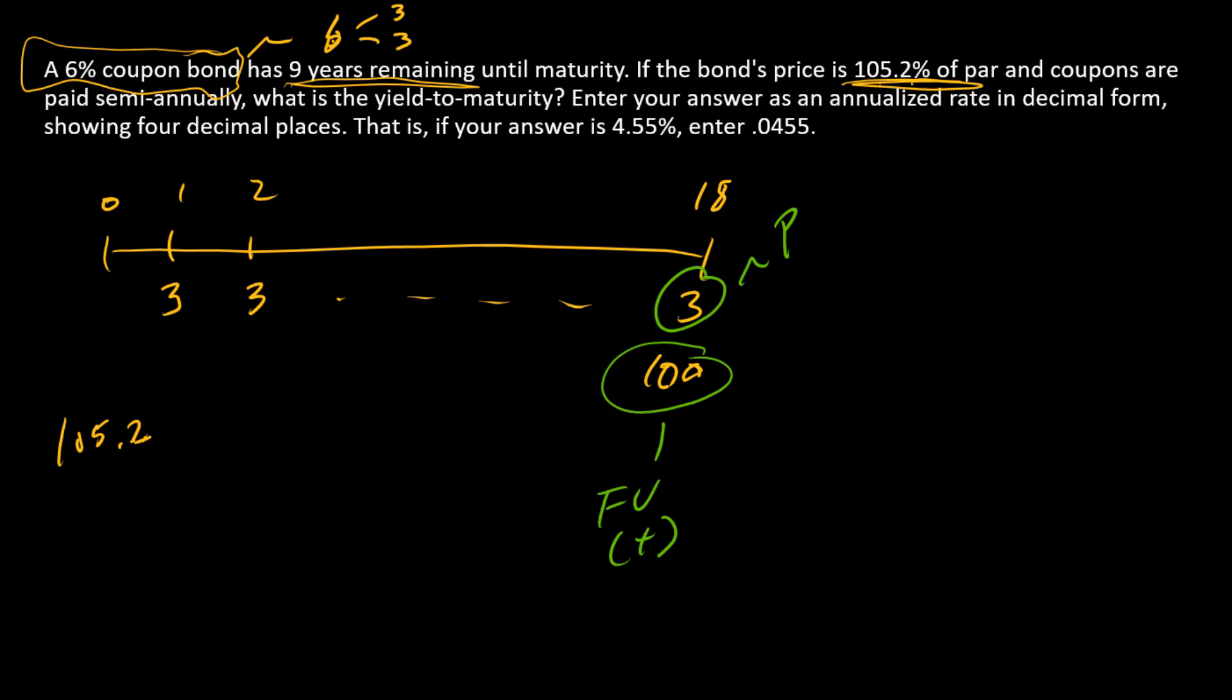$3, also received by the bondholder, is the annuity payment, and that will be positive as well. $105.2, that occurs right now, and so the bondholder would pay that to receive the bond. So that's going to be PV, since it's now, and it's going to be negative since the bondholder pays it.